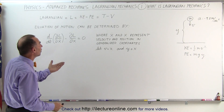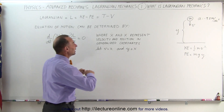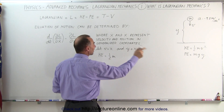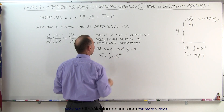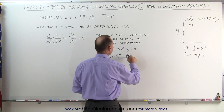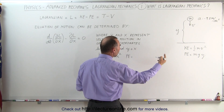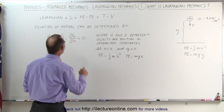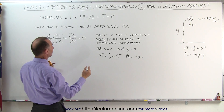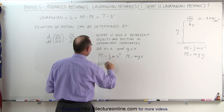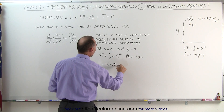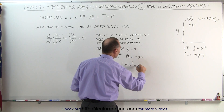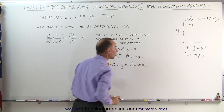Let's find the Lagrangian for this particular situation. The kinetic energy becomes one-half the mass of the object times the velocity x-dot squared. The potential energy is equal to mgy, but instead of y we use the generalized coordinate x, so it becomes mg times x. The Lagrangian L — kinetic energy minus potential energy — can now be written as one-half m times x-dot squared minus mgx. This is what we call the Lagrangian.